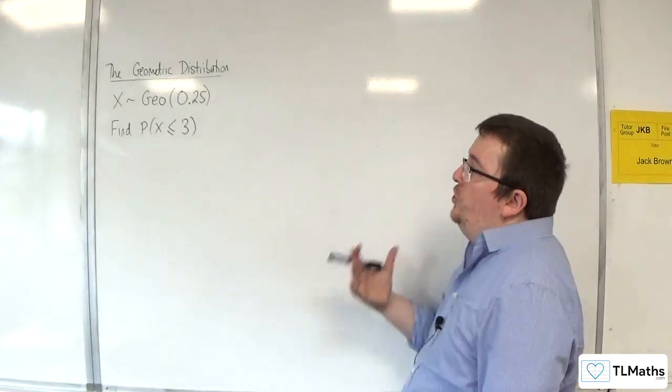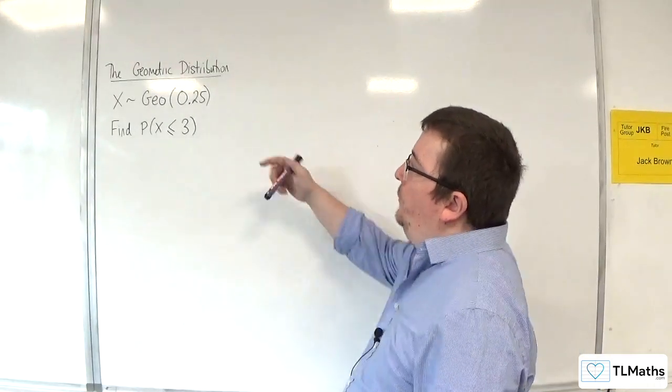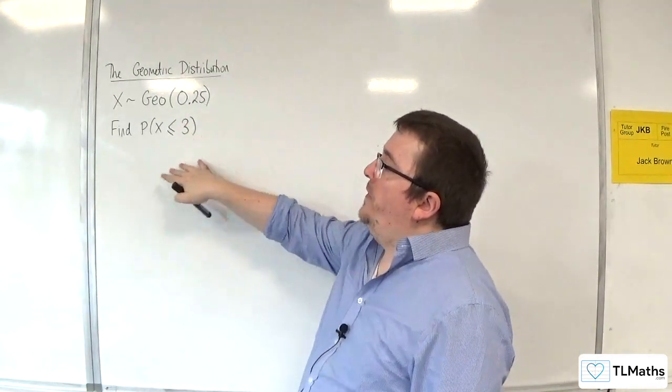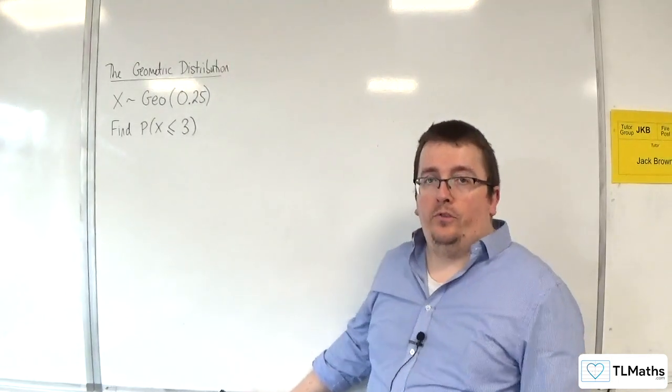So let's say we've got a geometric distribution with P as 0.25. Find the probability that X is less than or equal to 3.